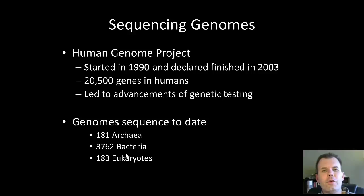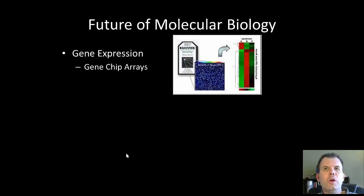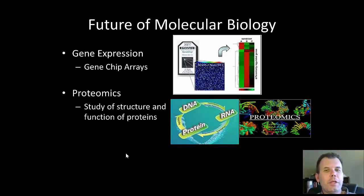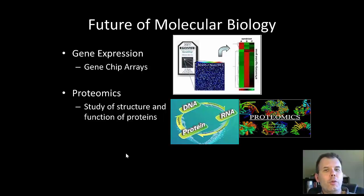Where is molecular biology going in the future? One direction is looking at how genes are expressed — taking organisms and taking a snapshot of what their genes are doing at a given time. For example, infecting an animal and asking what genes are turned on at 8 hours, 24 hours, and 48 hours, then comparing all that gene expression data. Another thing we're looking at is what proteins are being made — how proteins interact with one another, how they're used in cells, and how they interact. This is called proteomics. The study of sequencing genomes was called genomics, and looking at and characterizing proteins is called proteomics.